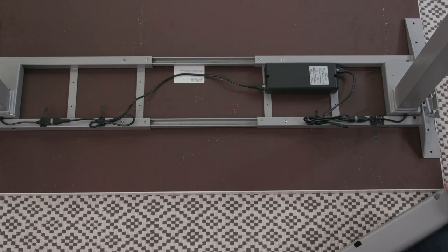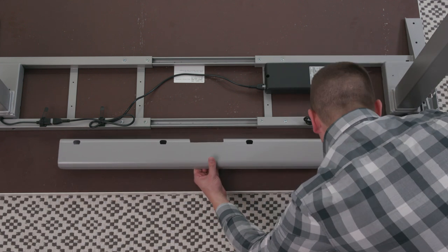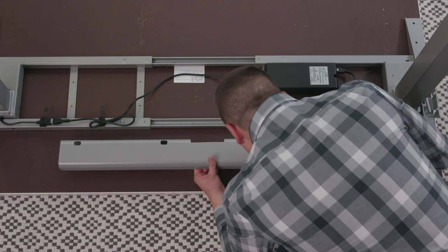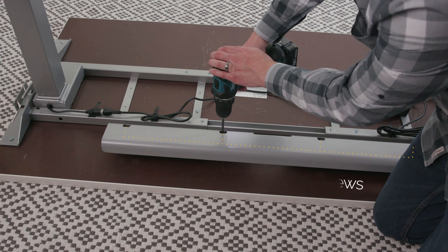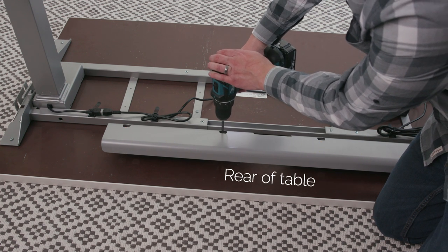Install the cable management while the tabletop is face down. Position the cable tray in the center of the table. Attach the cable tray using the four M5 Phillips round head screws. Make sure the open end faces the rear.